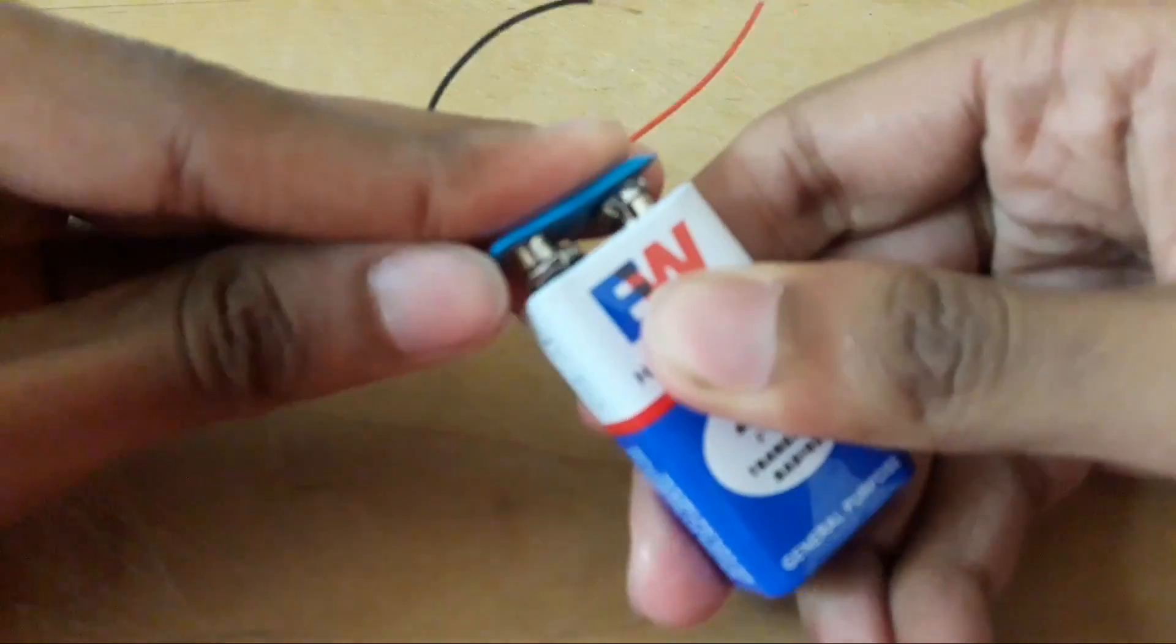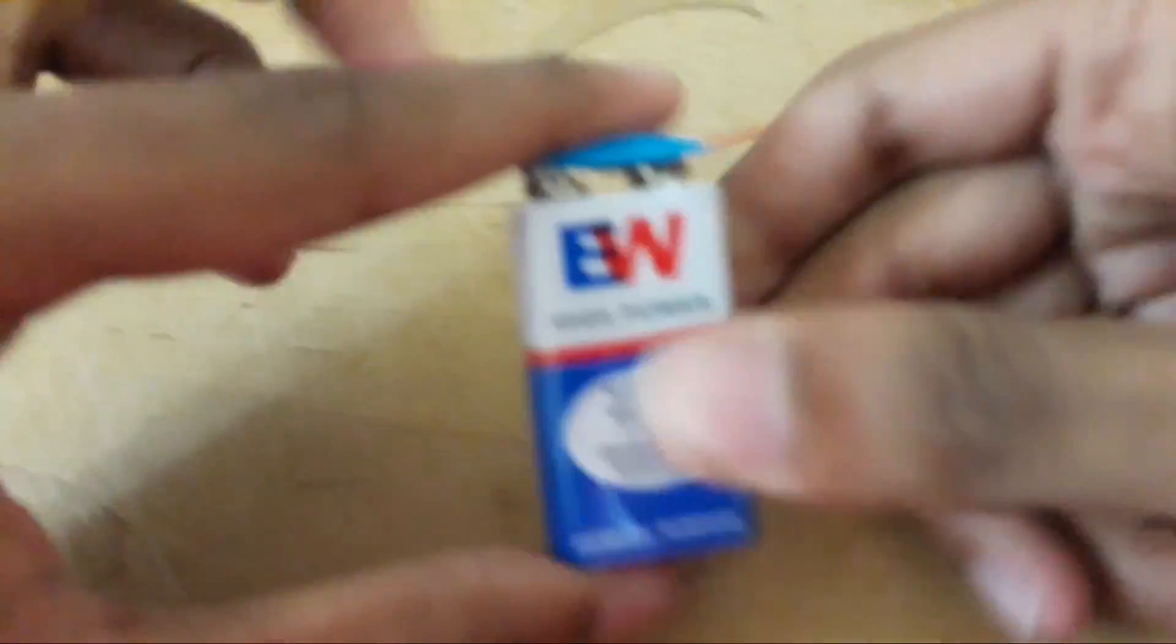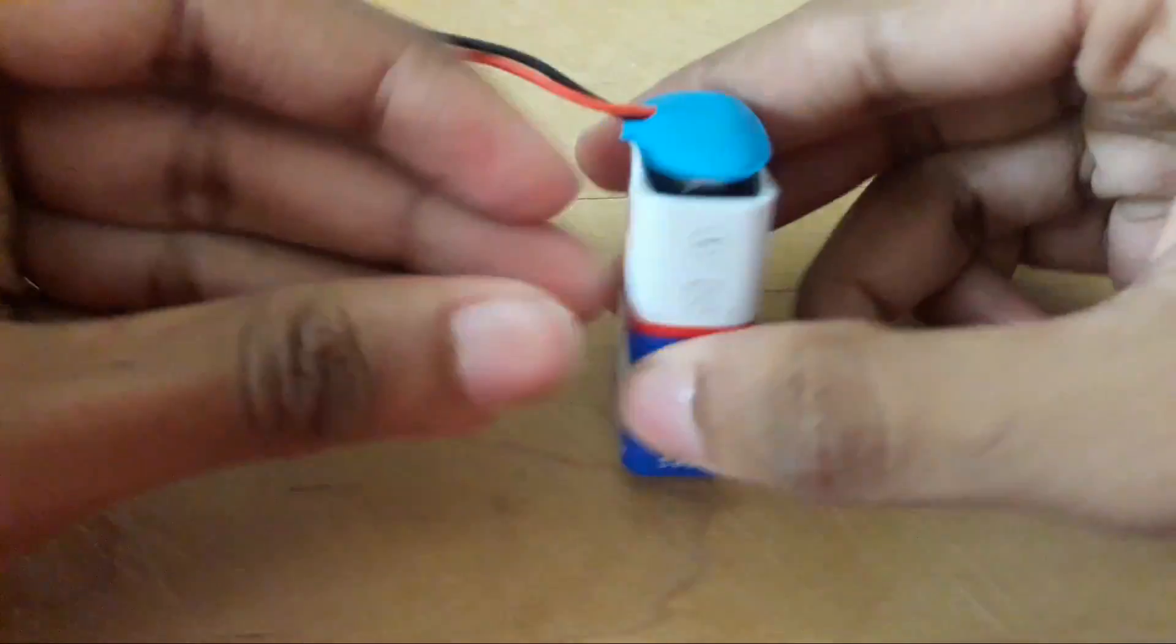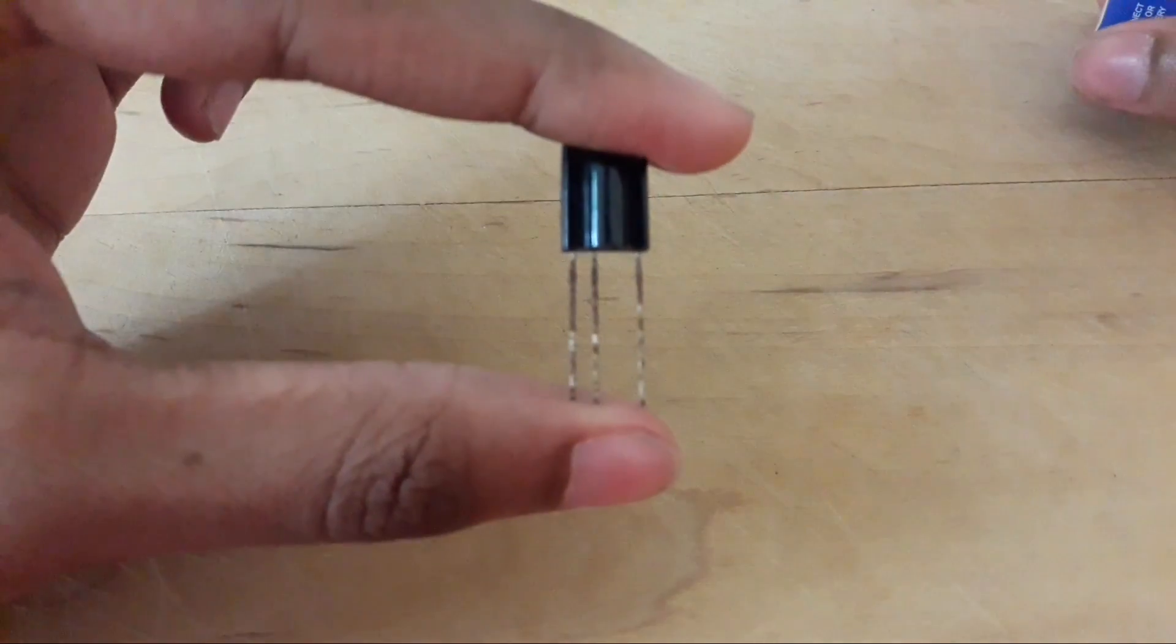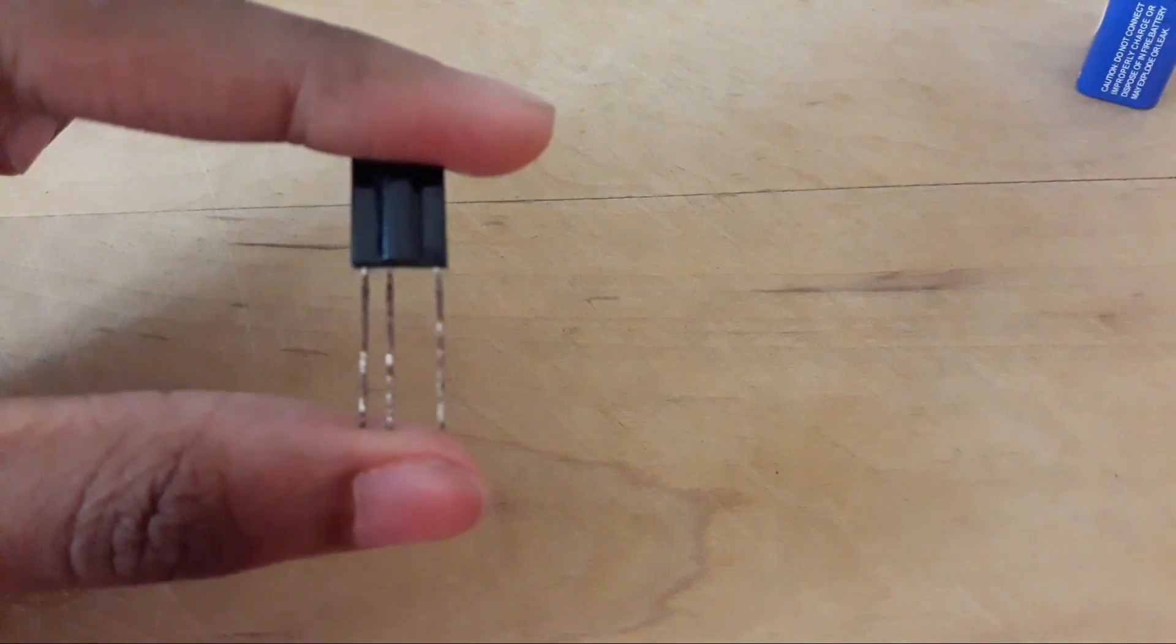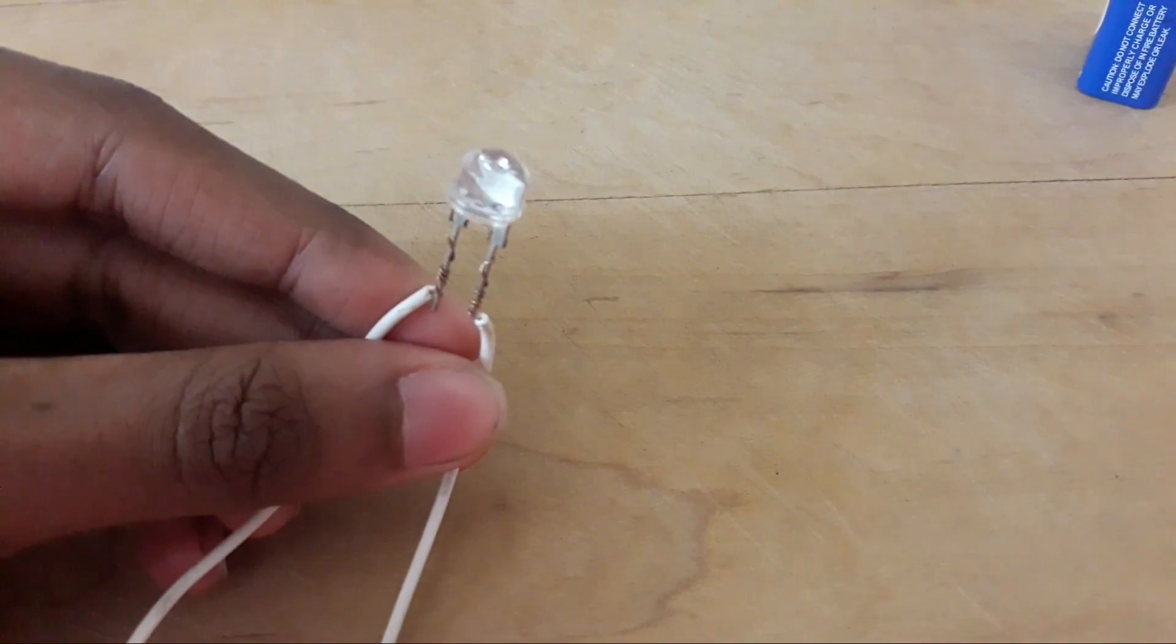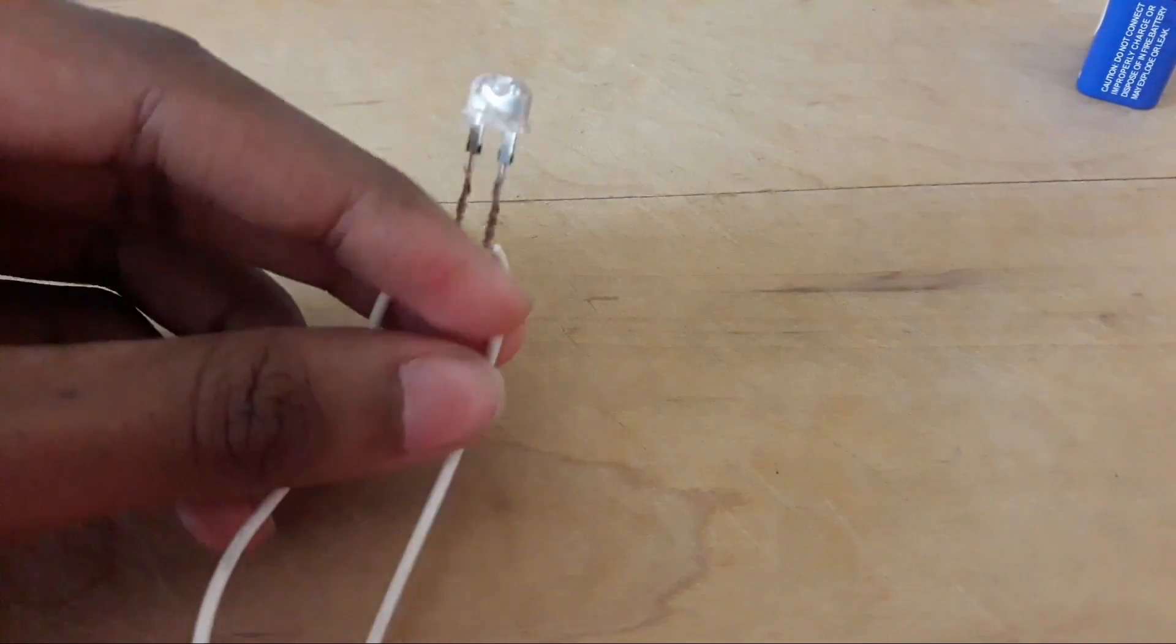So for this project, you need a 9V battery with a battery clip. You also need this infrared receiver which is called a TSOP1738. You need an LED and that's it.